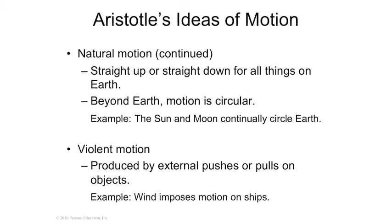Anything outside of the earth was considered the heavens, and the heavens worked mathematically. Everything was perfect mathematical combinations, and so circles, circles, circles. According to the Greeks, everything in the heavens moved in orbs, or globes, or circular motion.